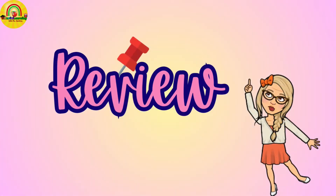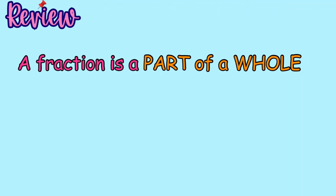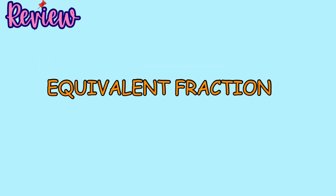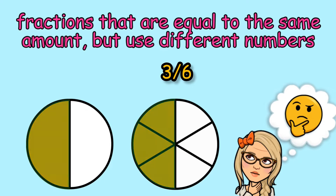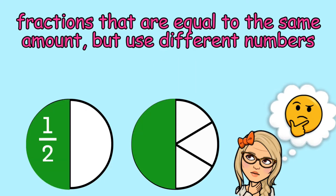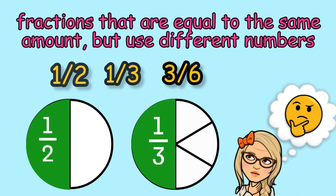Let's review how fractions can be equivalent. A fraction is a part of a whole, but how are fractions equivalent? Fractions are equivalent when they show the same amount. For example, these two fraction circles show me the fractions one-half and three-sixths. The fractions one-half and three-sixths are equivalent fractions.